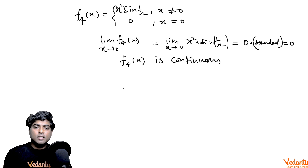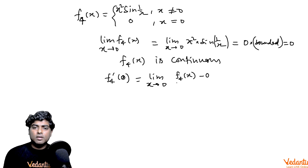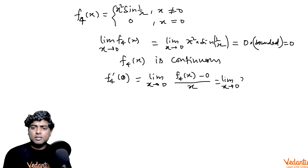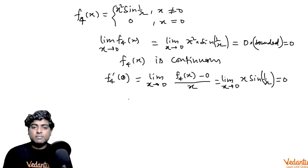For differentiability at x = 0, using the first principle: f4′(0) = limit as x → 0 of [f4(x) − f4(0)] / x = limit of x² sin(1/x) / x = limit of x sin(1/x). Again sin(1/x) is bounded between −1 and 1, and x → 0, so the limit is 0. Therefore f4 is differentiable at x = 0 with f4′(0) = 0.